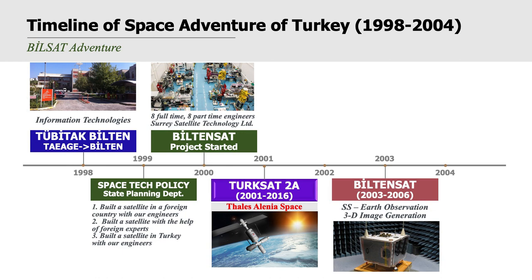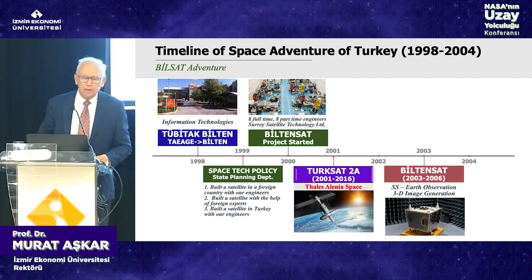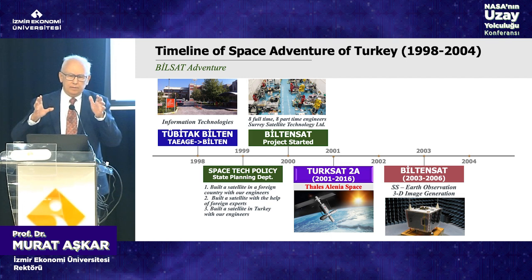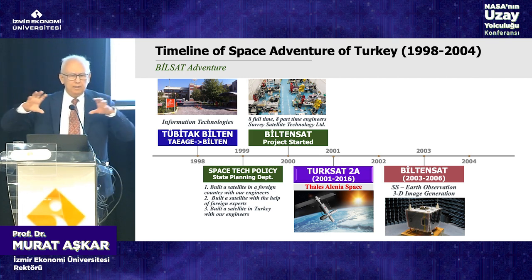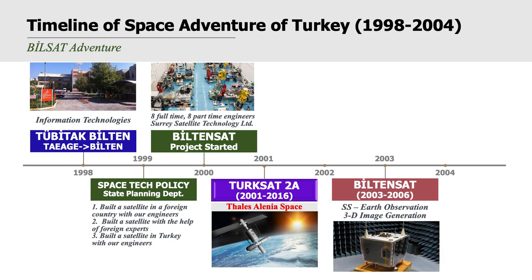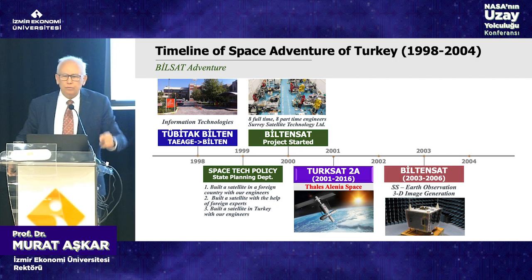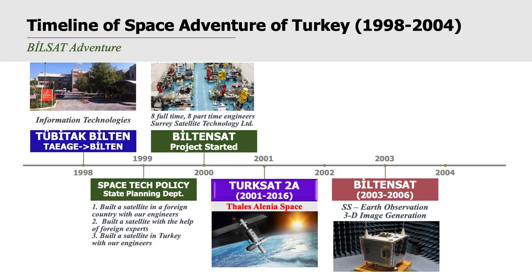I obtained a government grant and started discussing with the state planning department how to construct an Earth observation satellite. Turkey is in a very critical geopolitical position, so we needed to observe our country. I developed a mission where, like human eyes producing depth perception from two images, two cameras on the satellite would capture two different images of the same location to construct 3D imagery.